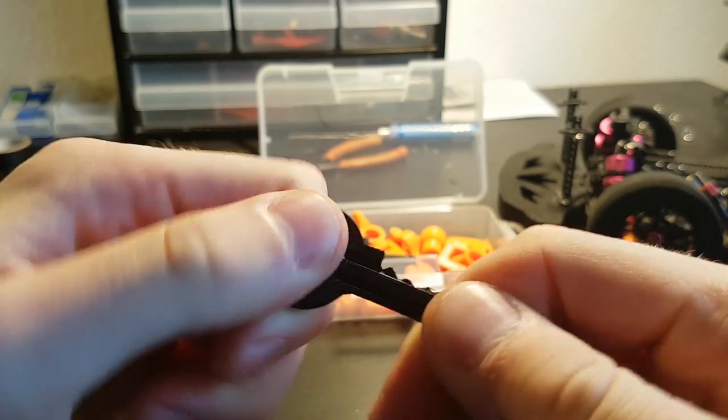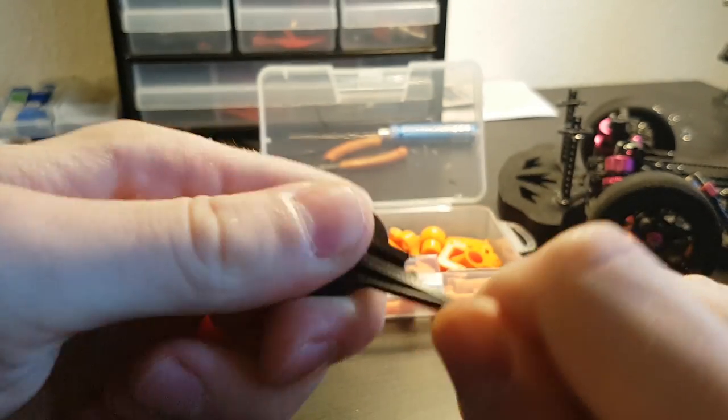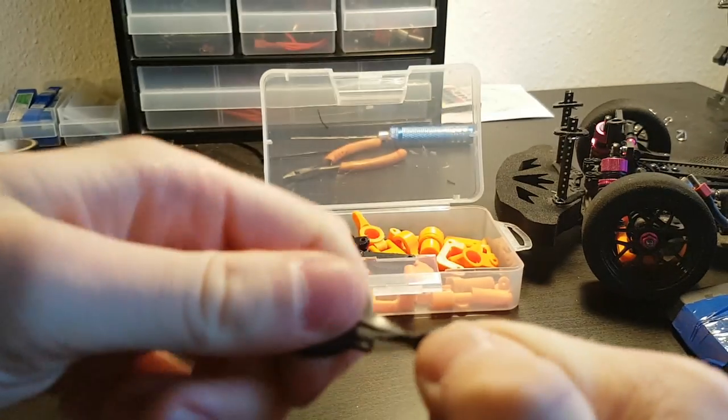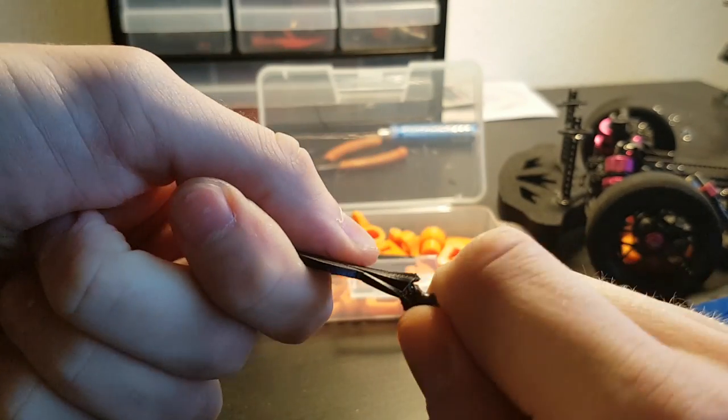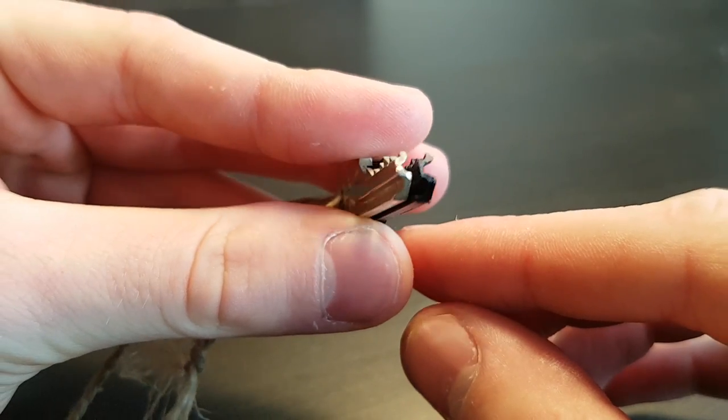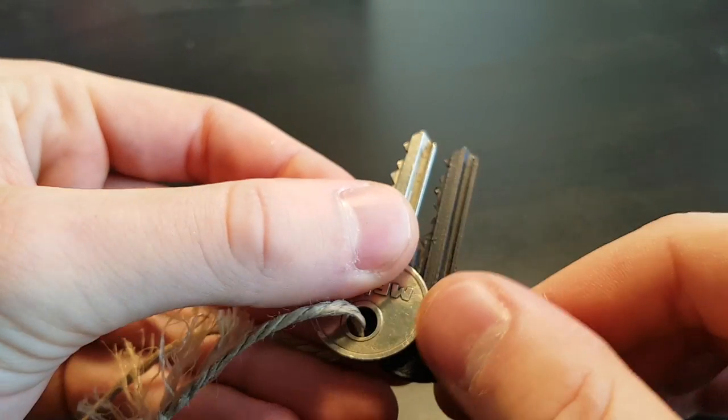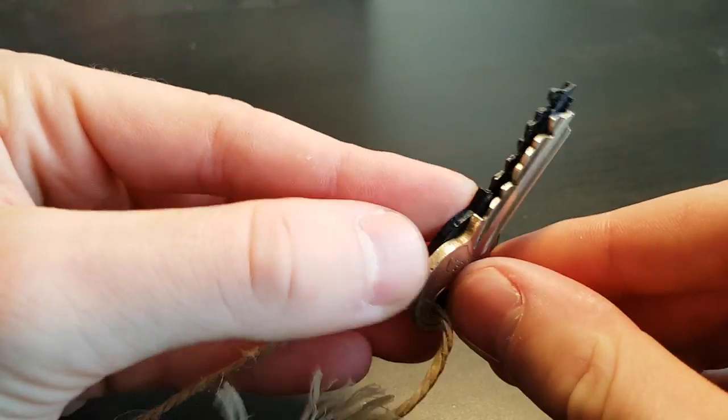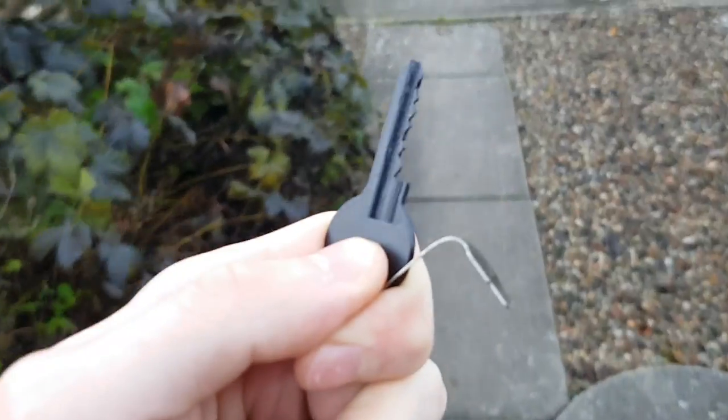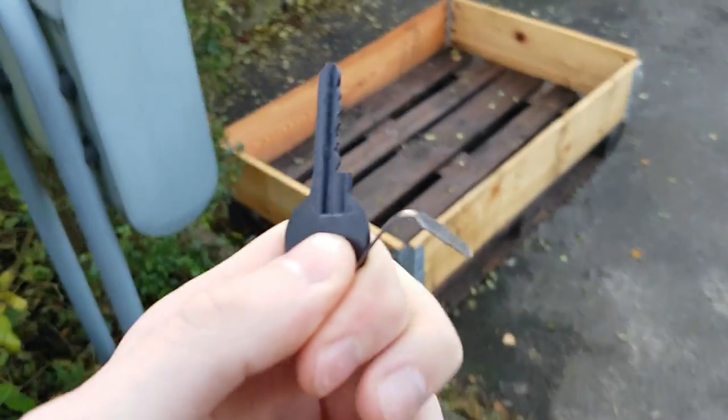This test shows that the key just bends. It's clear that you have to make the key really accurate for it to work. It takes a lot of trial and error to get it working. I thought that maybe it was the key that wasn't strong enough to turn the lock.